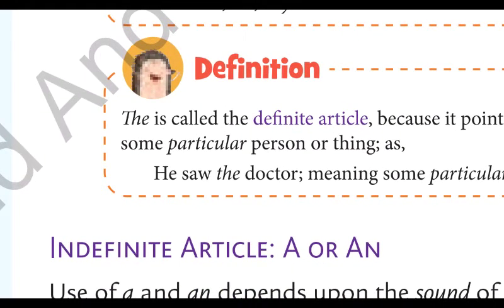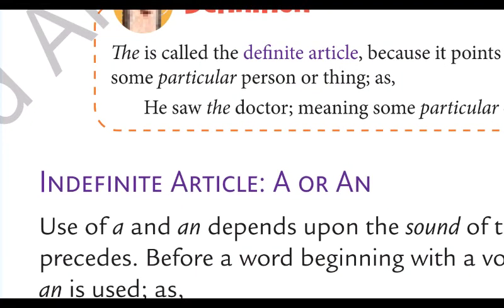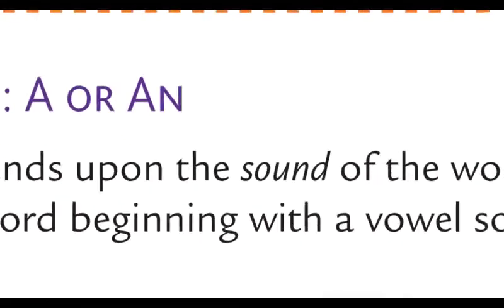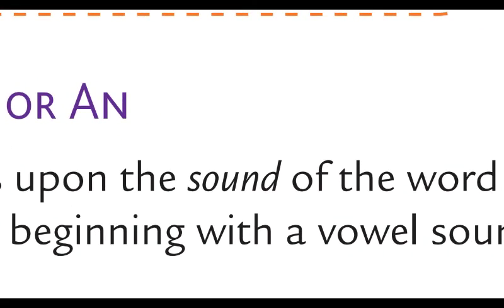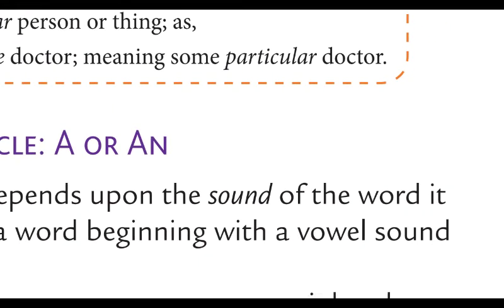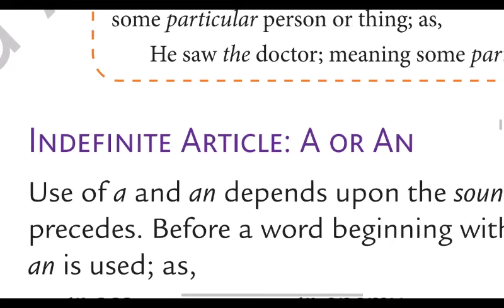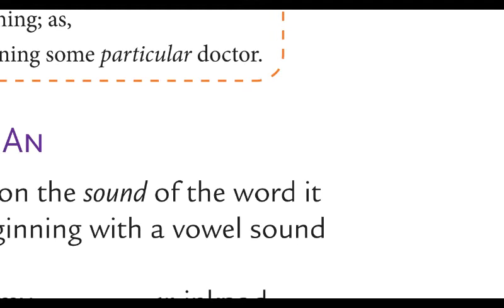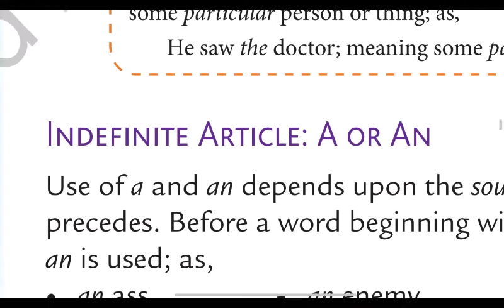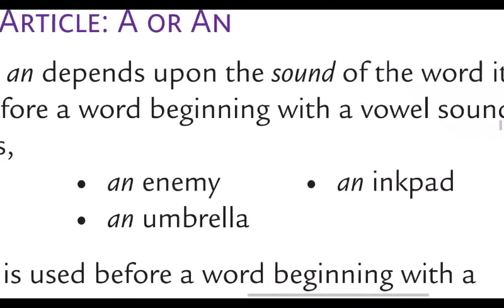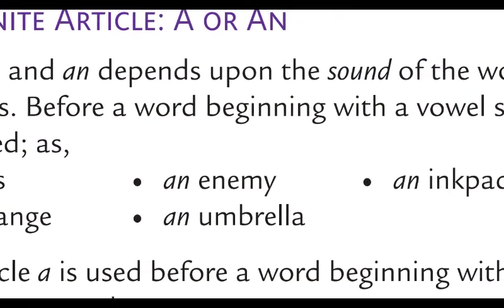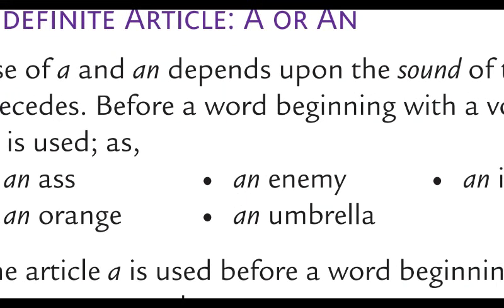Indefinite article: 'a' or 'an'. The use of 'a' and 'an' depends upon the sound of the word. The main thing to be kept in mind is we have to notice the sound of the word — the sound of the word is very important when we talk about articles. Yani jis word se pehle article lagaya jaana hai, uska sound dekhna zaroori hai. Before a word beginning with a vowel sound — agar koi word vowel sound se begin ho raha hai — wahan par 'an' ka use kiya jaega. Jaise: an ass, an enemy, an ink pad, an orange, an umbrella. In sabhi words mein vowel sound se shuru ho rahe hain, is waje se in sabhi ke pehle 'an' lagaya gaya hai.